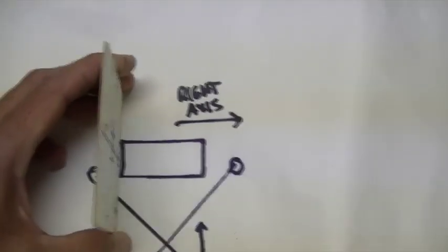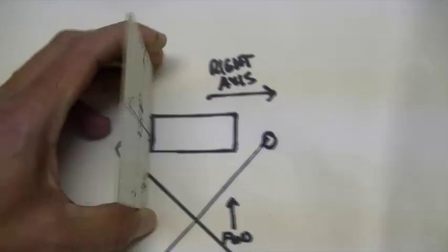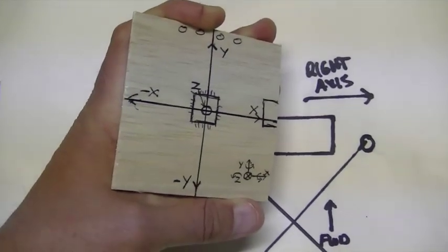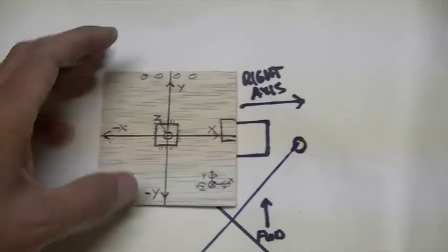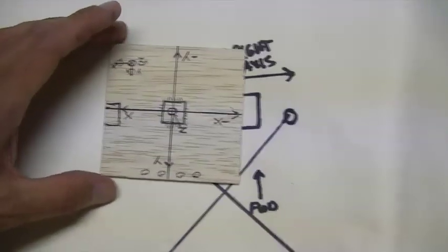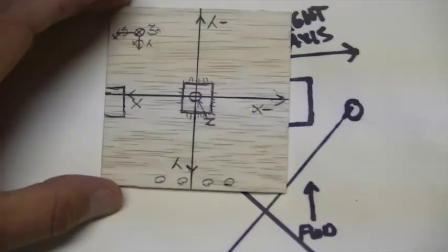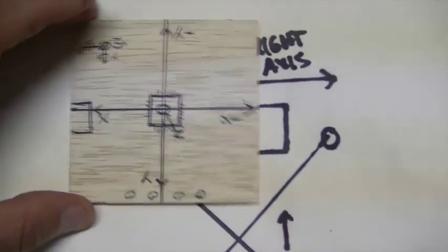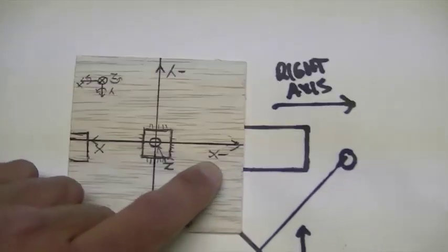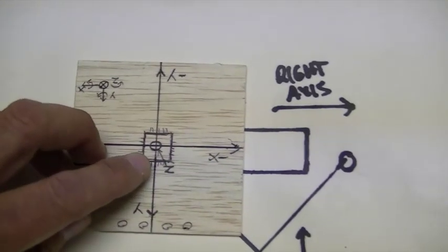What if you wanted it reversed with the wires coming out of the back? That's pretty simple. Now, to the right axis you have minus X. The top axis would be plus Z.